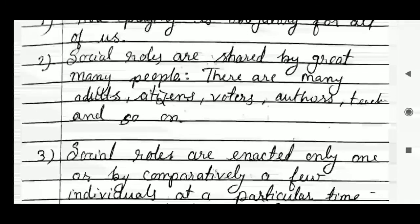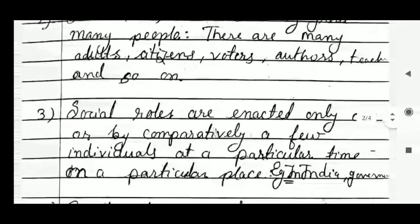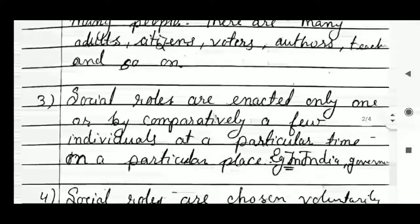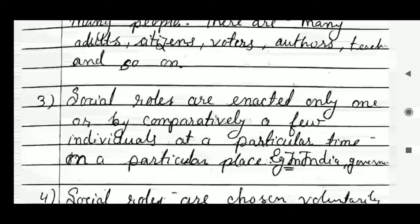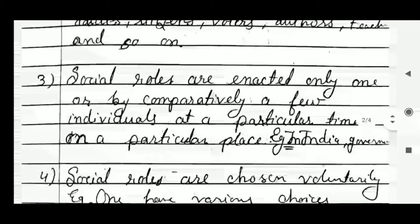Third, social roles are enacted only by one or comparatively few individuals at a particular time and place. For example, in India, a governor — only one governor can hold that role in a state at a particular time, though each state may have one governor.